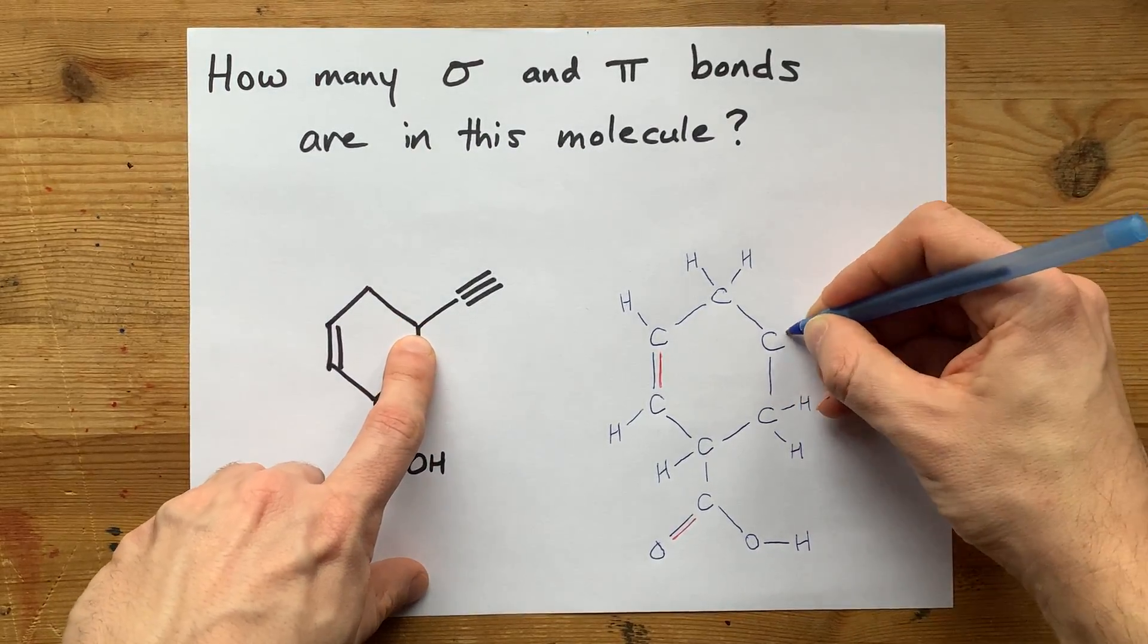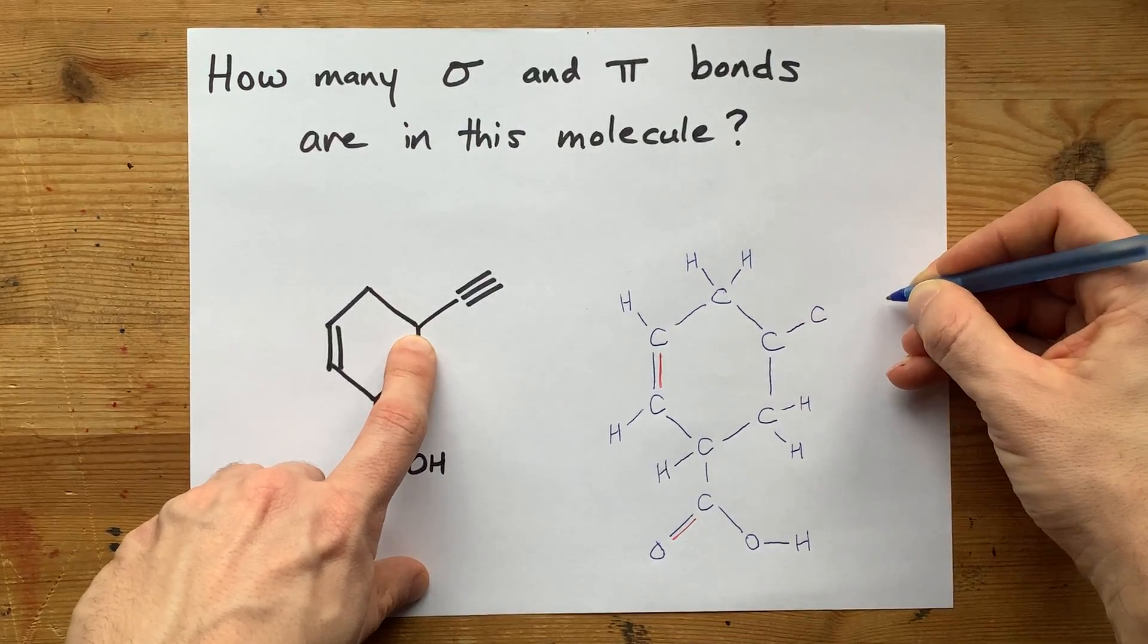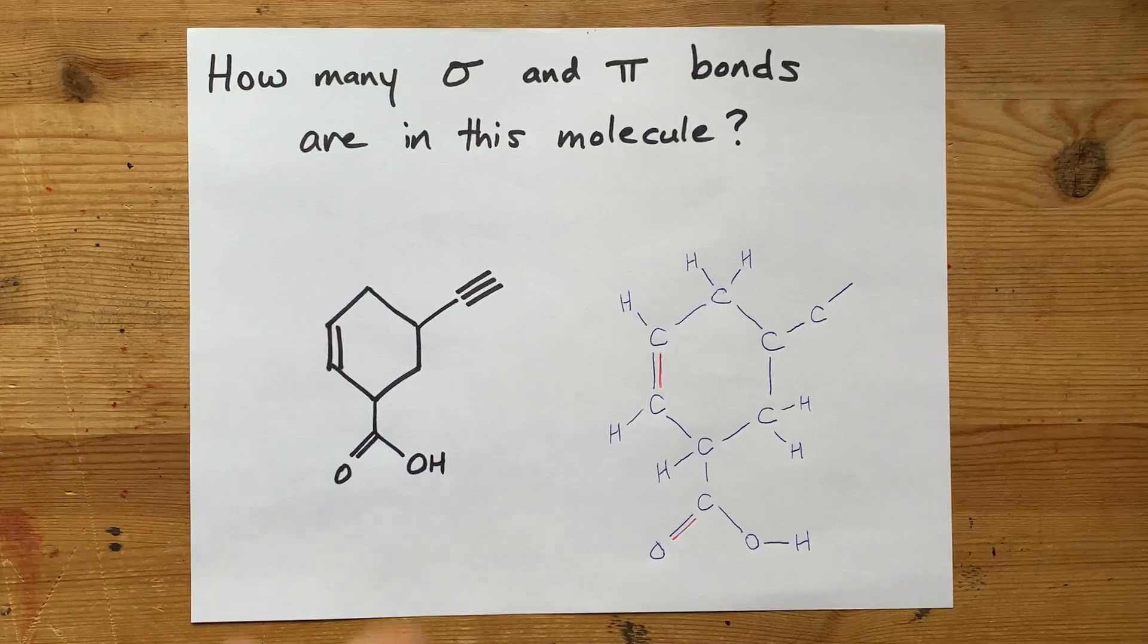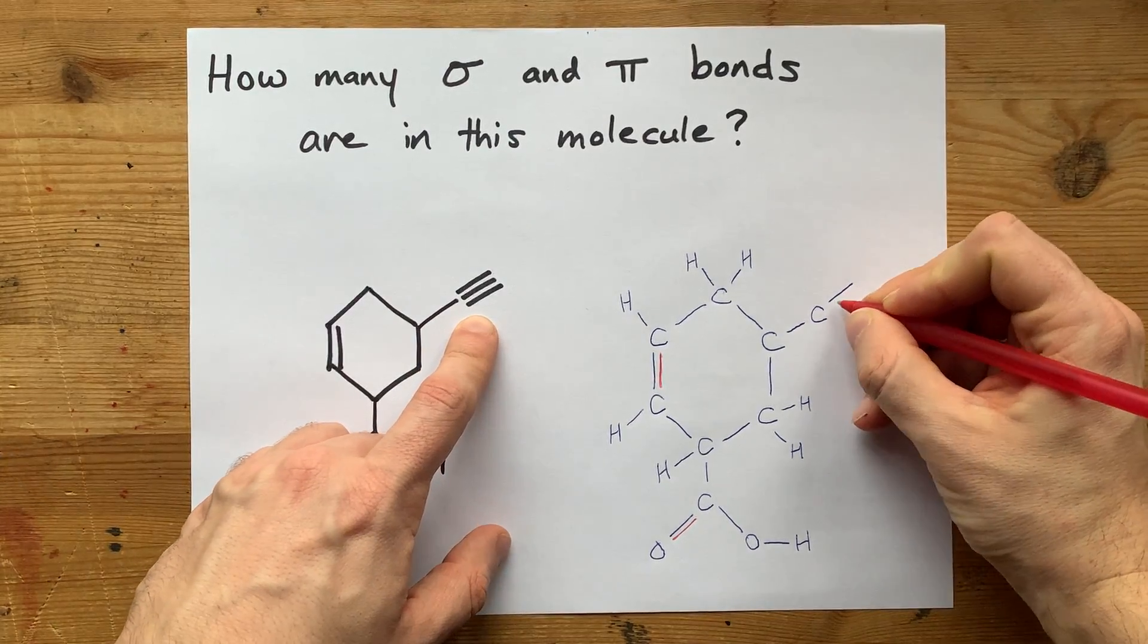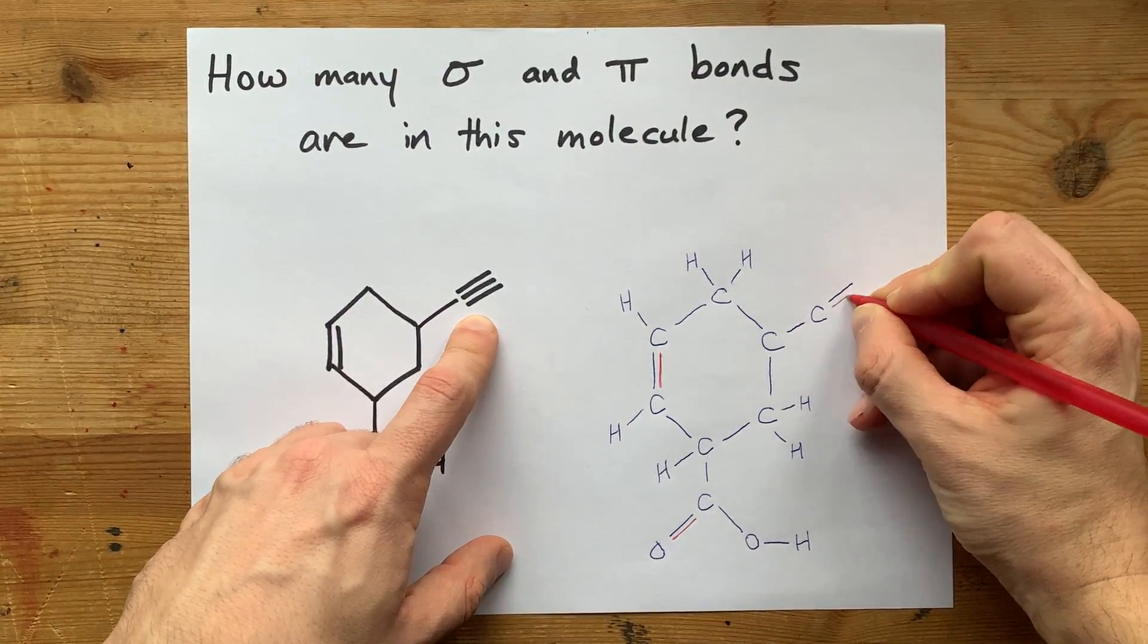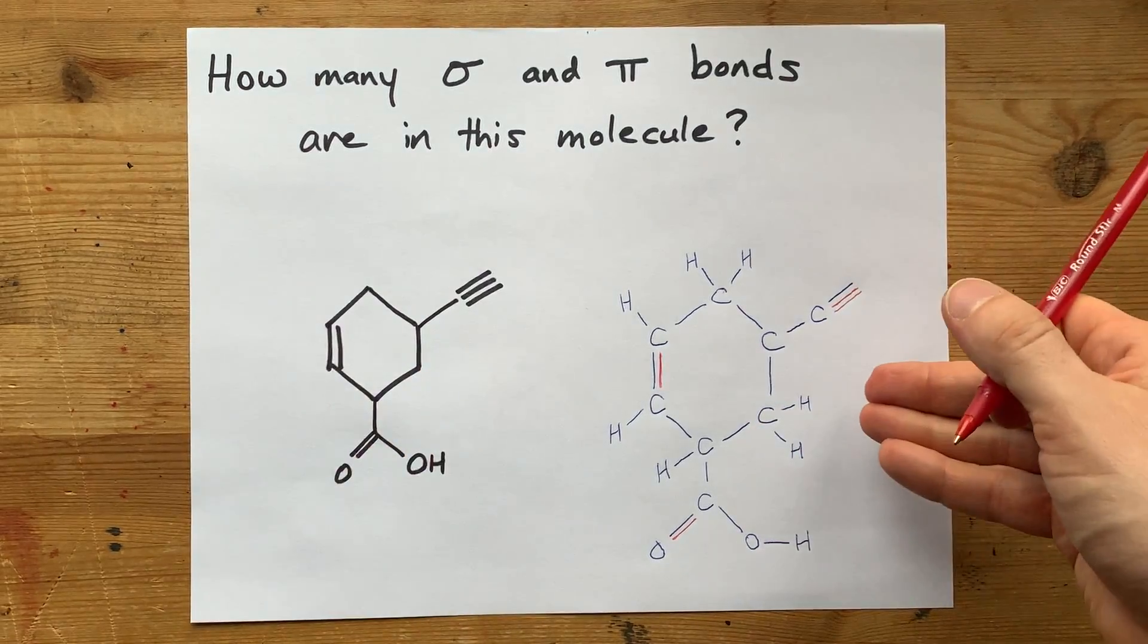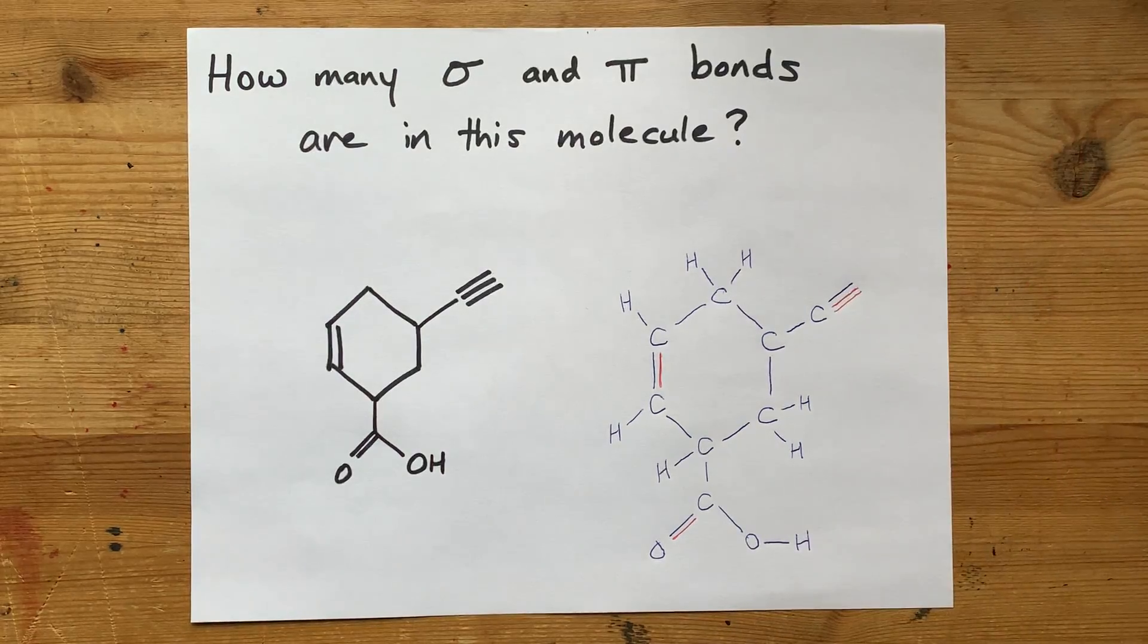That carbon was single bonded to another carbon, and then it was triple bonded to the next carbon in the chain. The first bond between the two is sigma. The next two are pi. Oh look, one, two red lines for the two pi bonds in that triple bond.